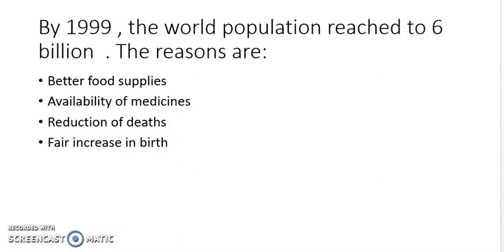The reasons for this large increase in world population include: first, better food supplies — compared to the 1800s, by 1999 food availability was much better. Second, the availability of medicines — as infant mortality rate was high in the 1800s, medicines became more easily accessible, which reduced the death rate.